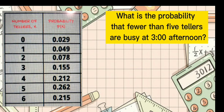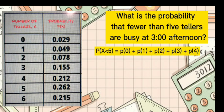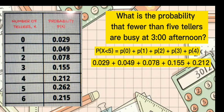So it would be P(X < 5) equals P(0) plus P(1) plus P(2) plus P(3) plus P(4). Then substitute: 0.029 plus 0.049 plus 0.078 plus 0.155 plus 0.212. Then add, and the answer is 0.523.